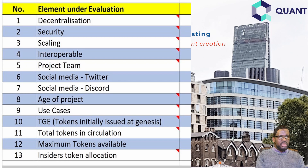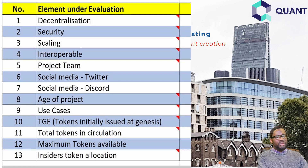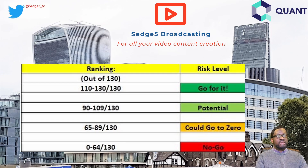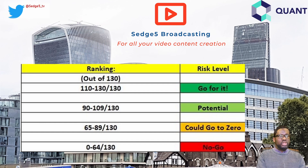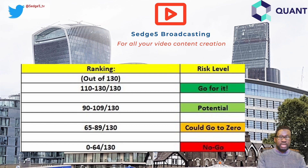We are going to score these 13 elements between 0 and 10. Once scored, we aggregate the total and classify it under risk categories — because this exercise is all about controlling risk. You are trying to protect your resources and your funds, and you need to assess whether the crypto project you are about to invest in is a sound project. We use our DYOR risk evaluation to establish that.